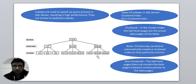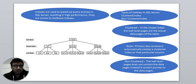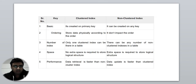So in one line: a clustered index holds the actual data in the leaf-level node, while a non-clustered index holds only the pointer to the actual data. Whenever needed, the pointer will direct you to the actual data leaf-level node. Now let me show you a comparison table I've designed to help understand the dos and don'ts of clustered and non-clustered indexes.